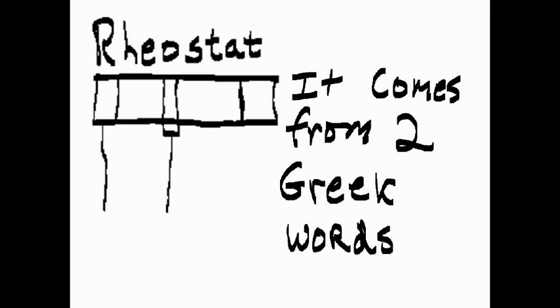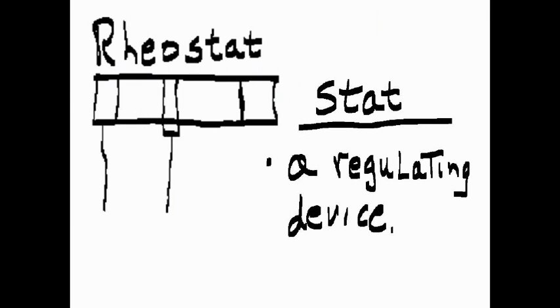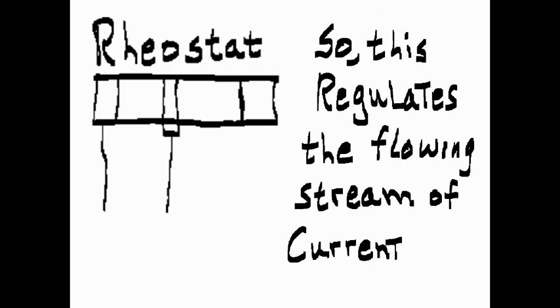It comes from two Greek words: Rios, a flowing stream, and stat, a regulating device. So this regulates the flowing stream of current.